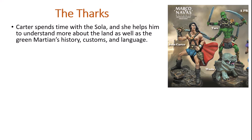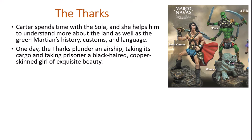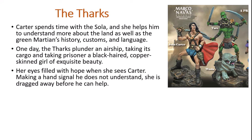As Carter goes through more trials, he spends time with Sola, who helps him understand the land, as well as the green Martians' history, customs, and language. Much of this is based on ideas about evolution at the time — evolutionary changes that created these two races of Martians. One day, the Tharks plunder an airship, taking its cargo, and they capture a black-haired, copper-skinned red Martian girl of exquisite beauty. Her eyes are filled with hope as she sees Carter. She makes a hand signal he doesn't understand, but he recognizes it as a call for help — before she's dragged away.